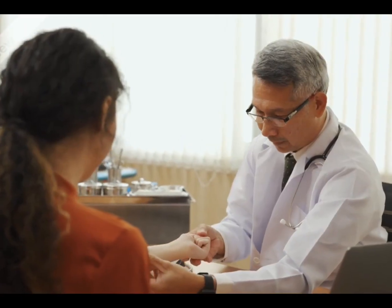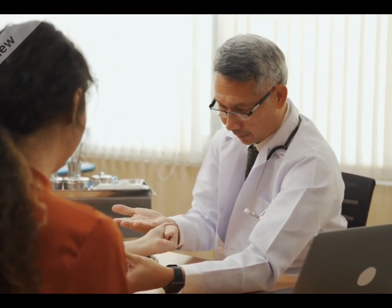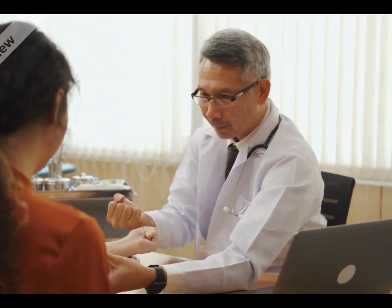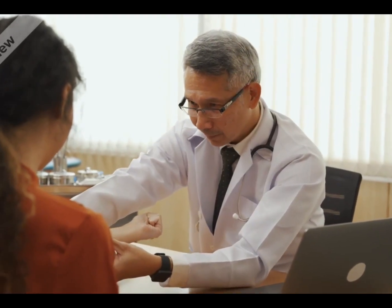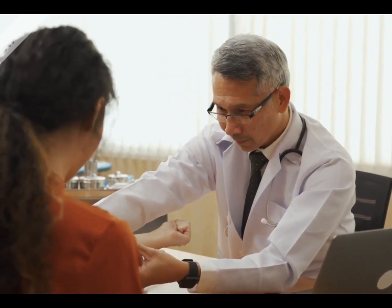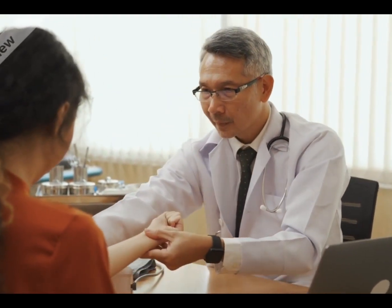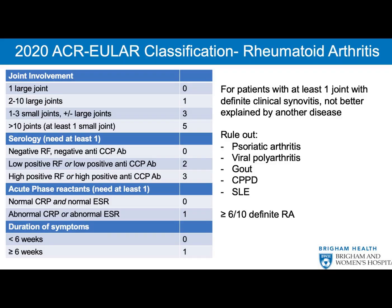ACR/EULAR 2010 Criteria for the Diagnosis of Rheumatoid Arthritis: Rheumatoid arthritis is diagnosed based on a point system, where the patient must score six or more points out of ten to confirm the diagnosis. Points are awarded based on four main categories.